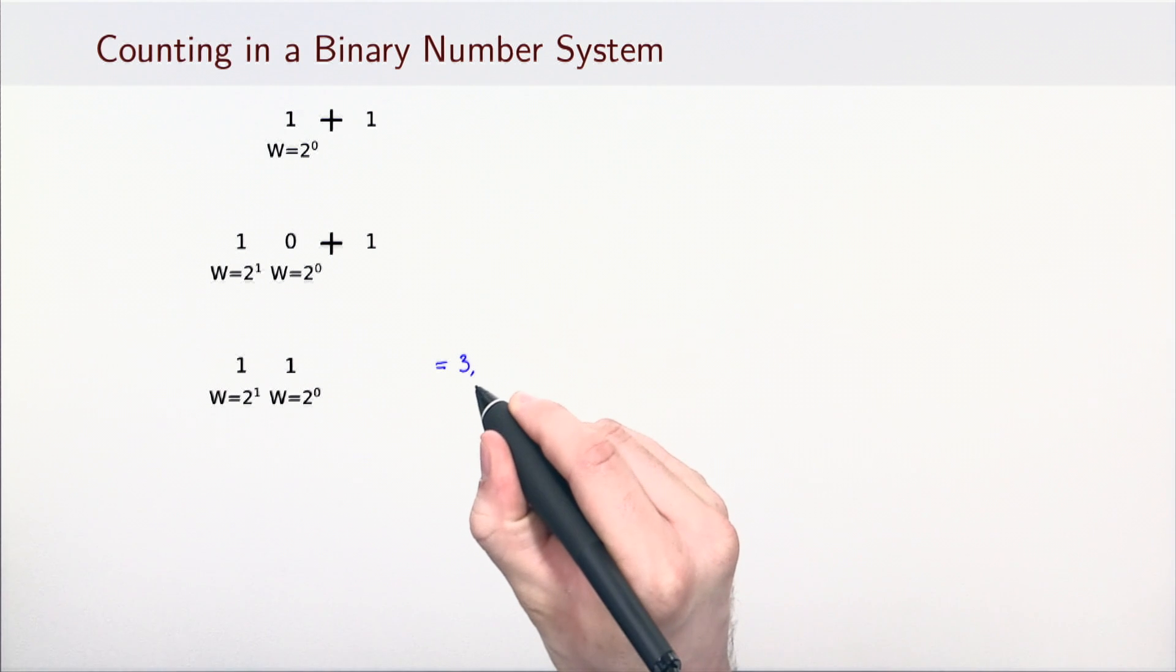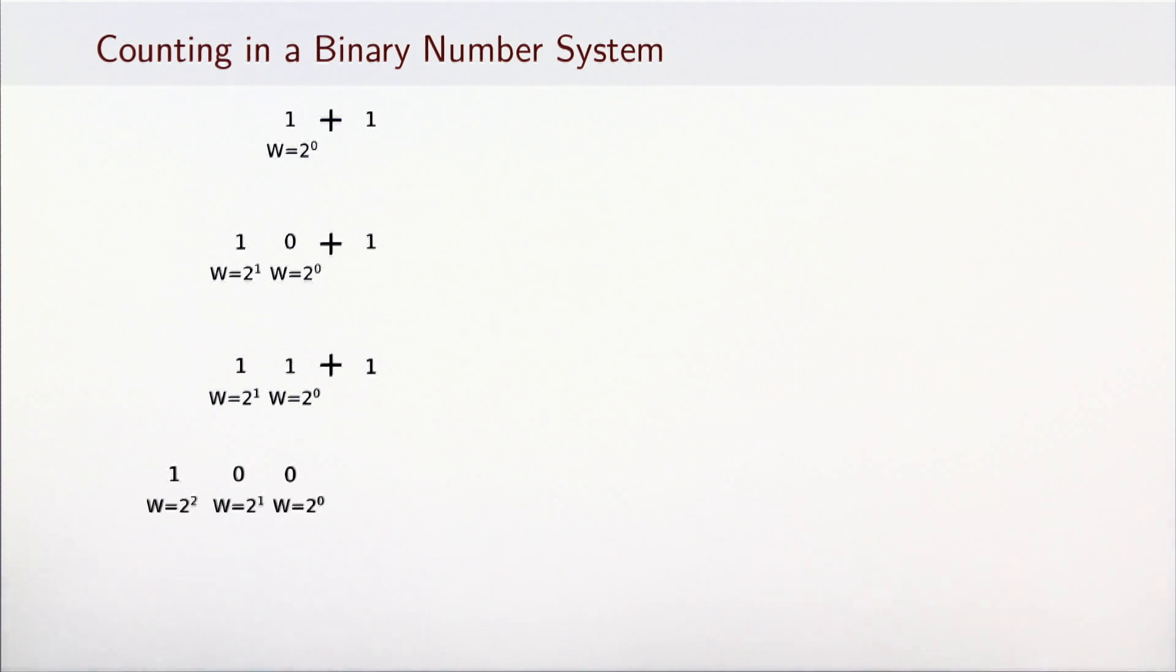In the next step, we need to perform two carry operations. First, we carry over the least significant digit and then, since the next digit is also 1, we repeat the carry process. We get the digit 100 or the decimal number 4.